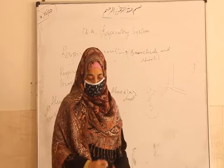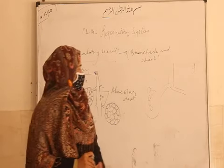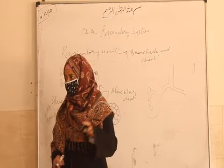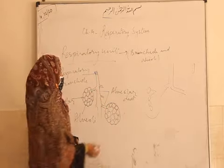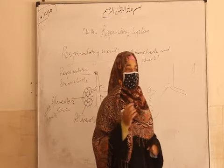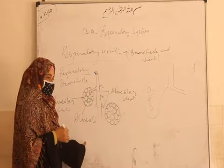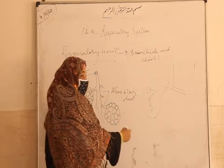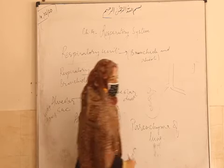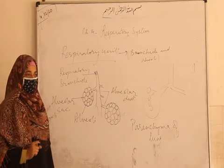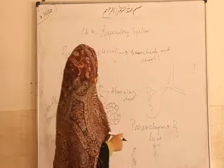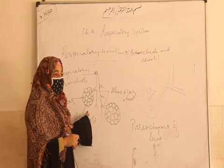This is the respiratory unit — here the gases will be exchanged in the alveoli. This terminal end of the respiratory tract, because it started from the nasal cavity and ended here, is also known as parenchyma of lung. Specifically here the gases are exchanged — they are the site of exchange of gases.